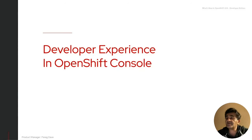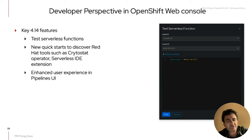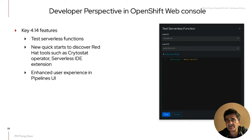Let's talk about the developer experience enhancements in OpenShift console. The developer perspective in the OpenShift web console was enhanced in version 4.14 with key capabilities around layered products like serverless and pipelines. Developers can now test serverless functions directly inside the console — create the function code, click the test button, and run it right there before pushing to Git. There are also new quick starts to discover Red Hat tools like the Cryostat operator, and the pipelines UI in both the developer and admin perspectives has been enhanced.